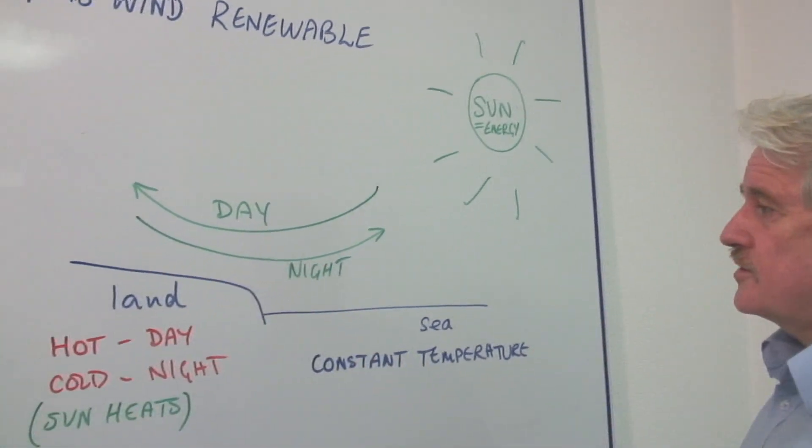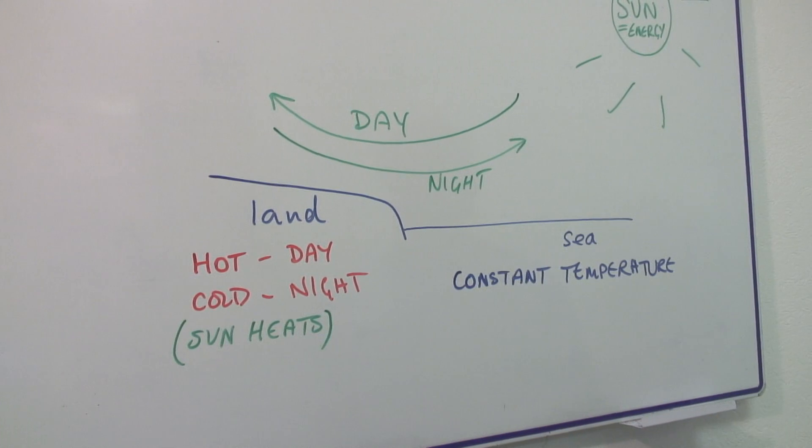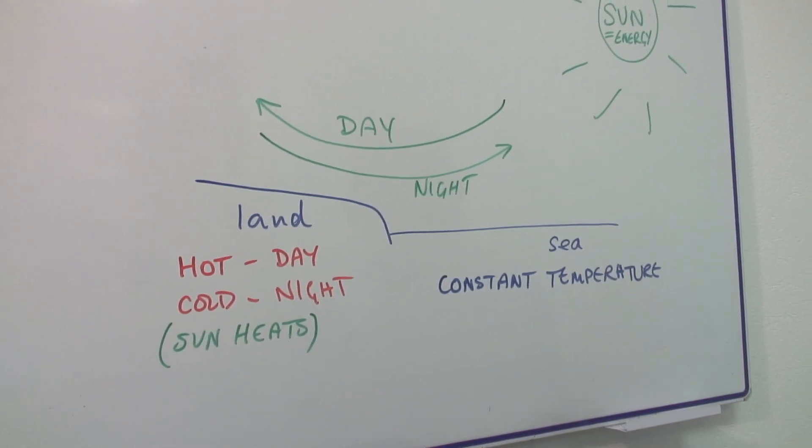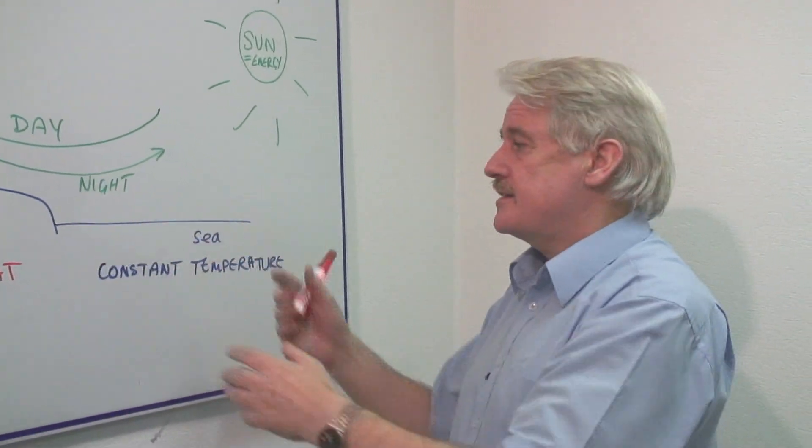Now, on the surface of the earth you have land and you have sea. And most coastal winds are caused by the difference in temperature between the land and the sea.